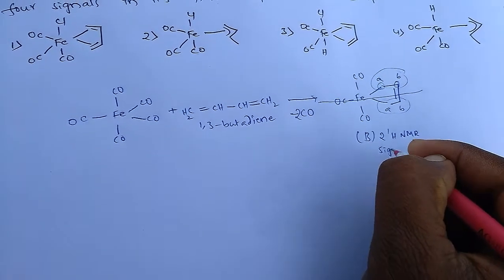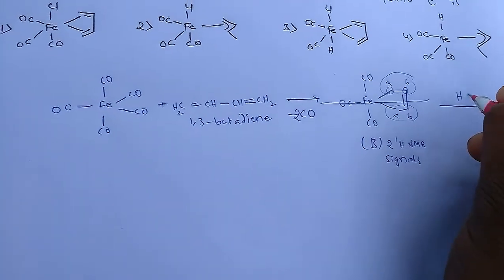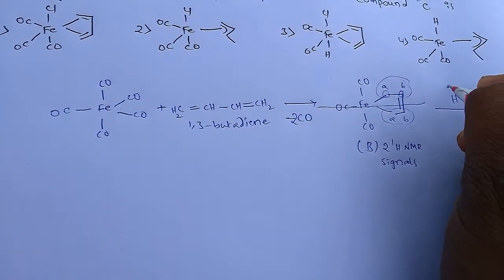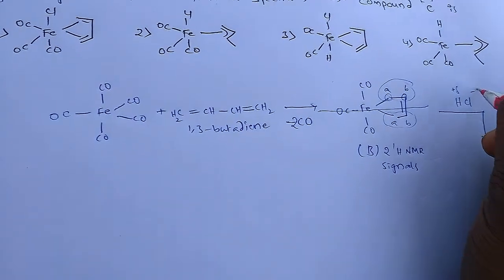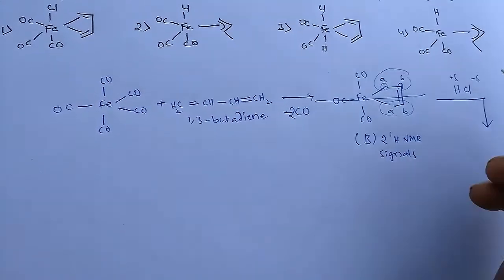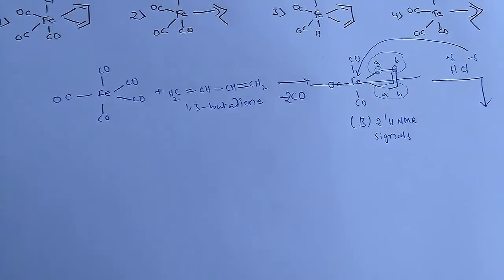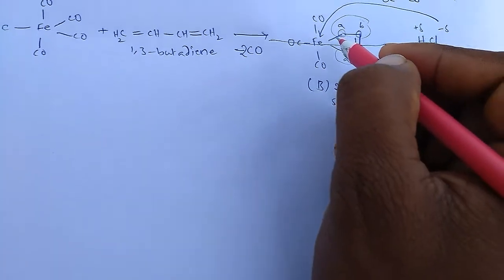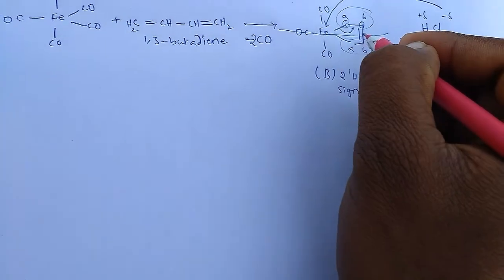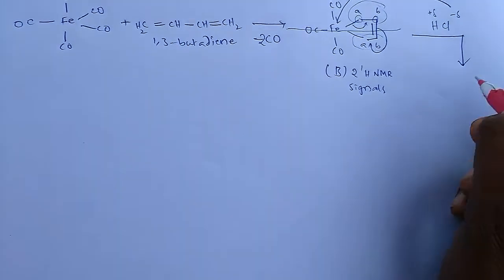2 H-NMR signals confirmed. On further reaction, B reacts with HCl. Hydrogen has a partial positive charge and chlorine has a partial negative charge. Metal carbonyl compounds easily undergo halogenation. Hence, the chlorine attacks iron, and this bond shifts here.